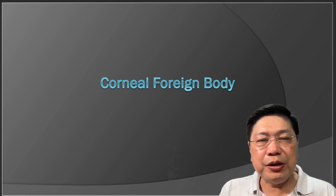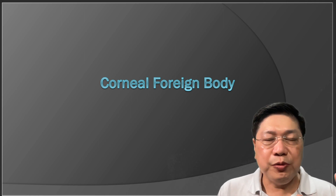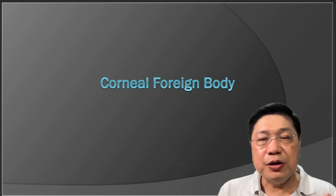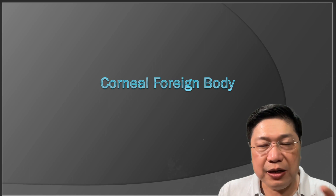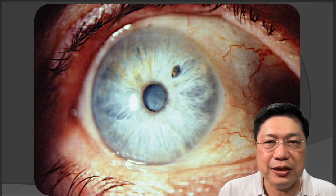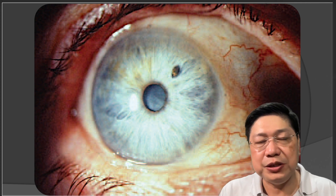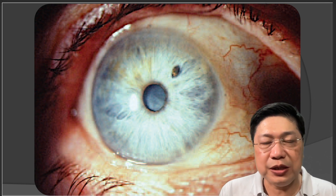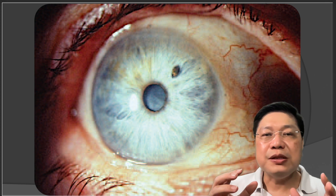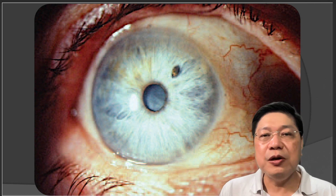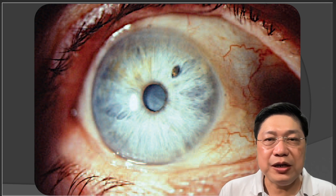A corneal foreign body is very common, especially in workers who deal with a lot of industrial activity — patients using grinders or drilling in industrial settings. In this case, there's a metallic foreign body actually embedded in the cornea. Most patients will try to remove it on their own by washing their eyes or using something eccentric like getting a piece of hair or cloth to scrape things off. But this usually causes more damage. You can easily remove this with a magnified view using clinic instruments and very fine tools.